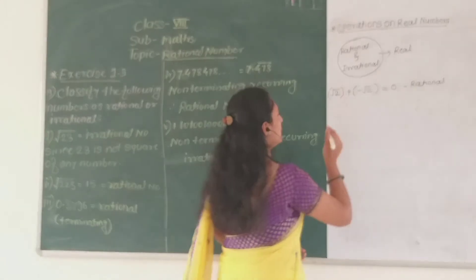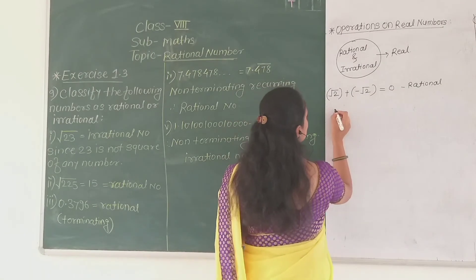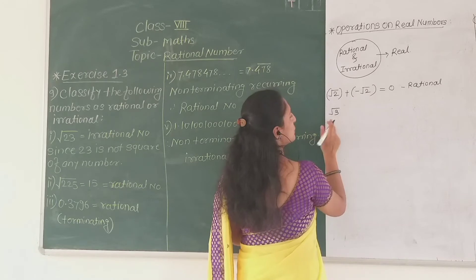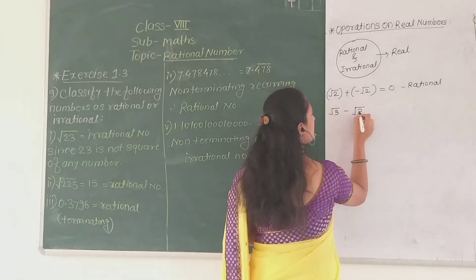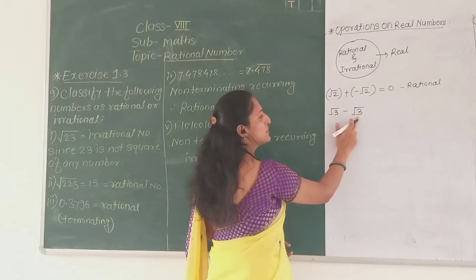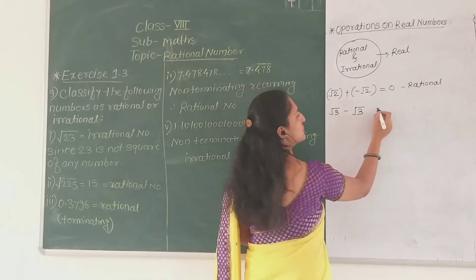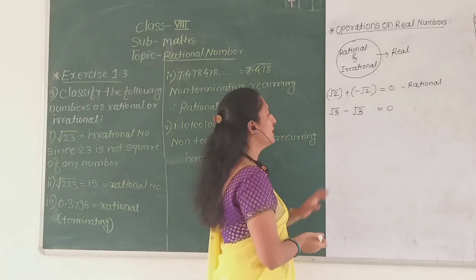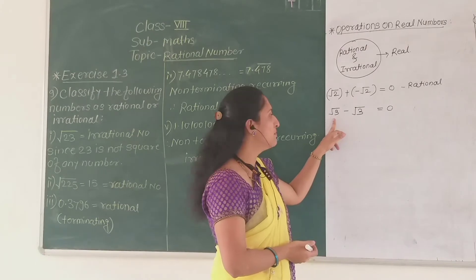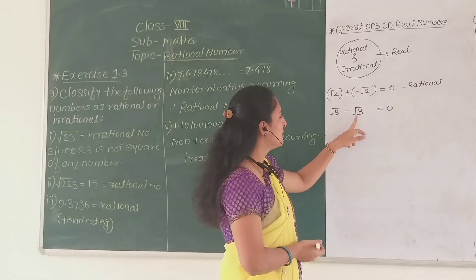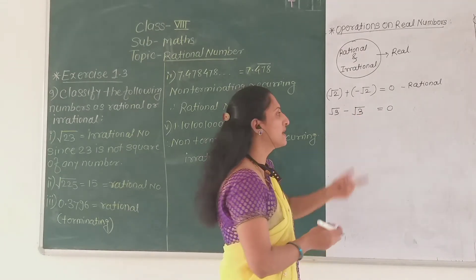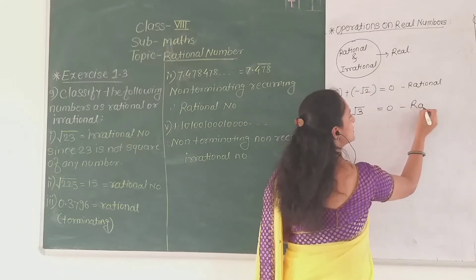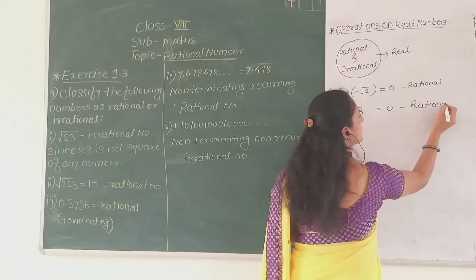Now if I subtract — root 3 minus root 3. Root 3 is an irrational number. Root 3 minus root 3 is also 0. So subtraction of two irrational numbers is not always an irrational number, since here 0 is a rational number.